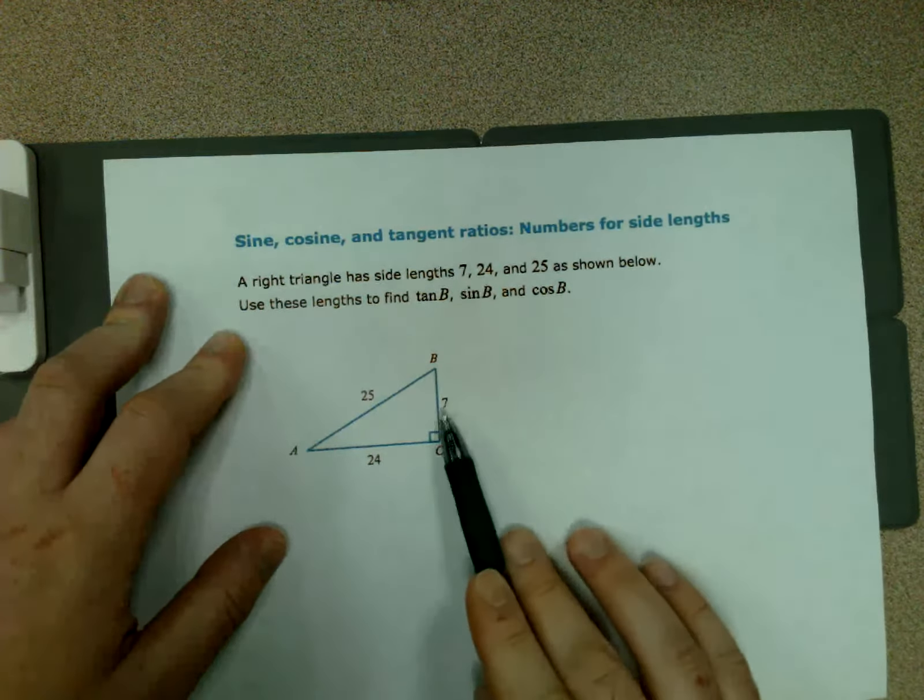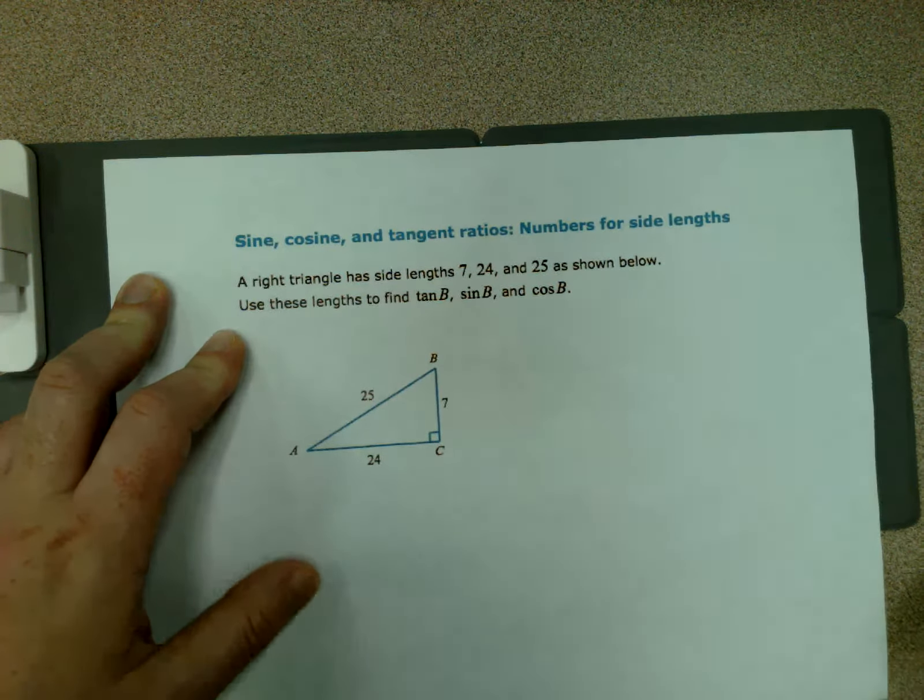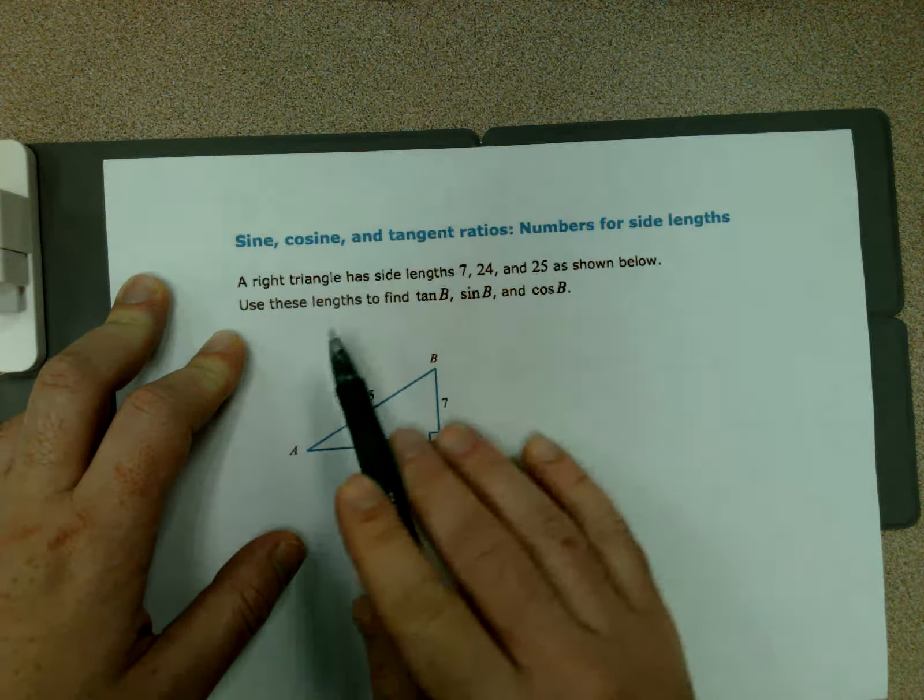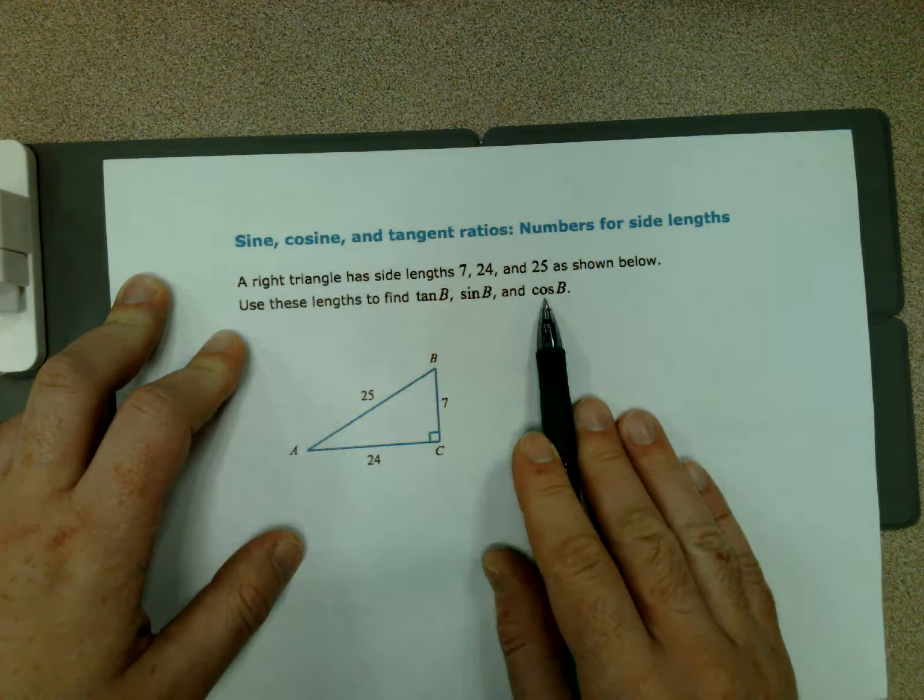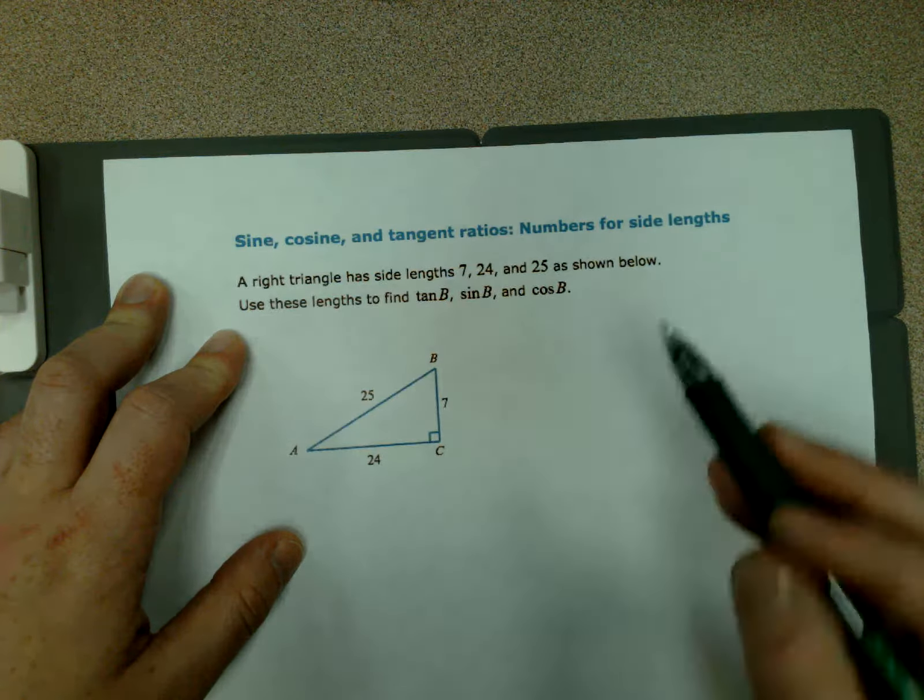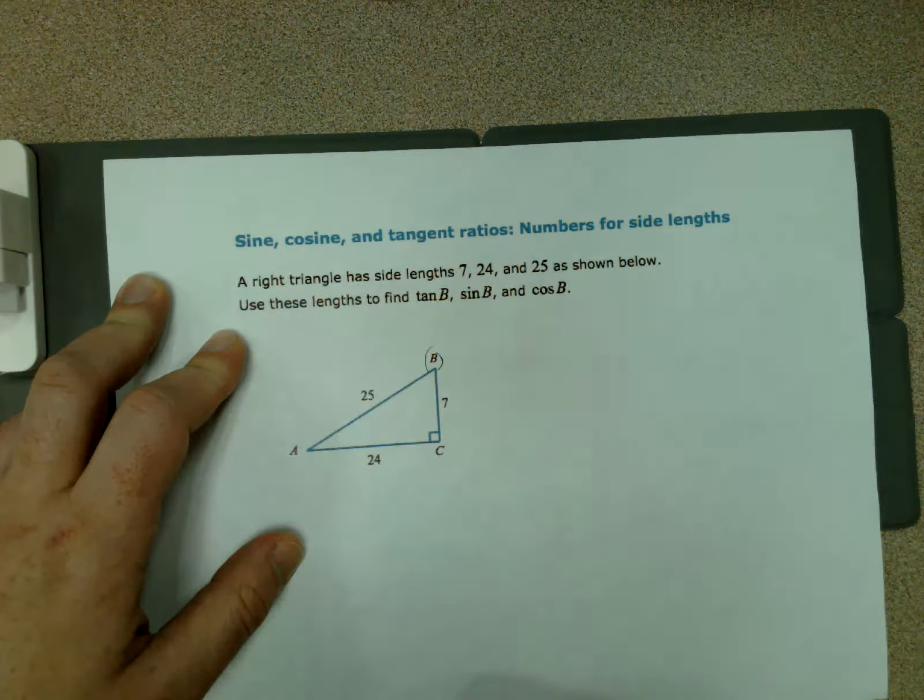In this instance we have side lengths 7, 24, and 25, and angles A, B, and C making up this triangle. We're going to use that information to find tangent of B, sine of B, and cosine of B. We have the same angle as our reference, so we're always in reference to angle B at the top here.